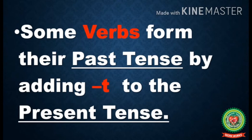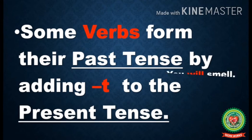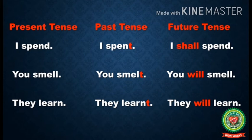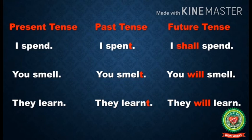Kids, some verbs form their past tense by adding t to the present tense. First example: I spend — the verb 'spend' is in present tense, so its past tense will be 'I spent' and its future tense will be 'I shall spend'. Second example: you smell — the word 'smell' is in present tense. Its past tense will be 'you smelled' and its future tense will be 'you will smell'.